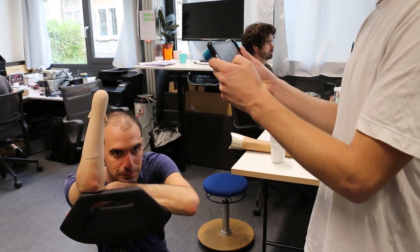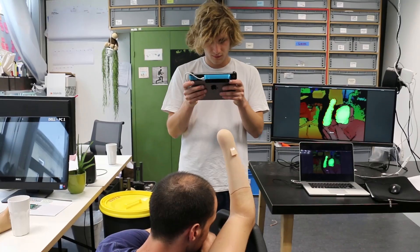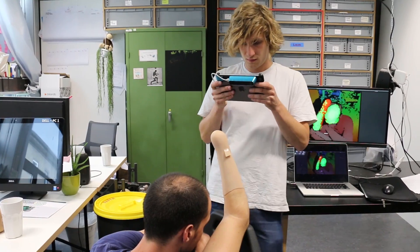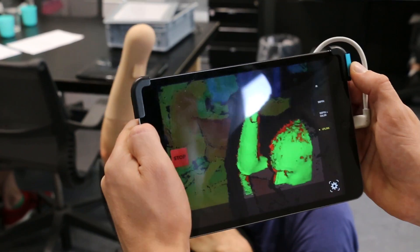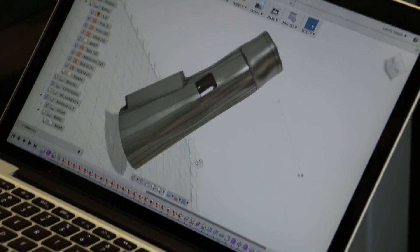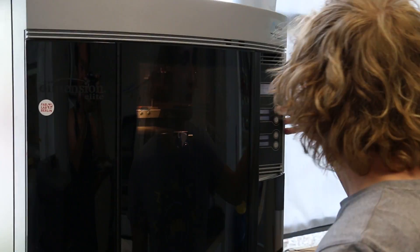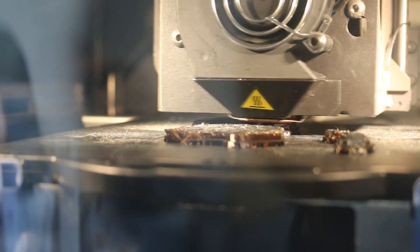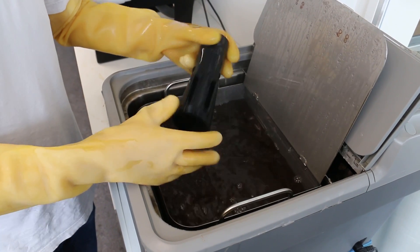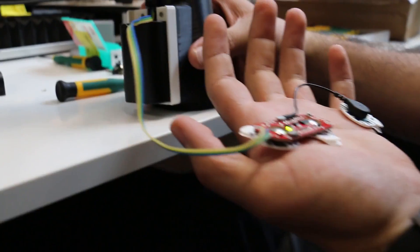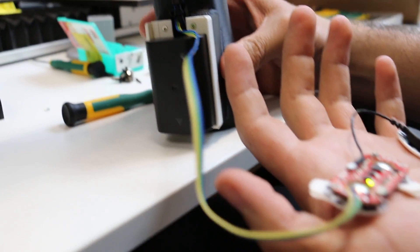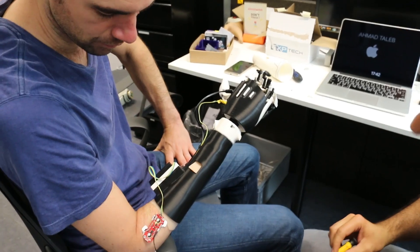Because the test was successful, we made the second hand with a printed socket based on the scan of my residual limb using a basic 3D scanner. We used affordable muscle sensors and a camera battery. And it works.